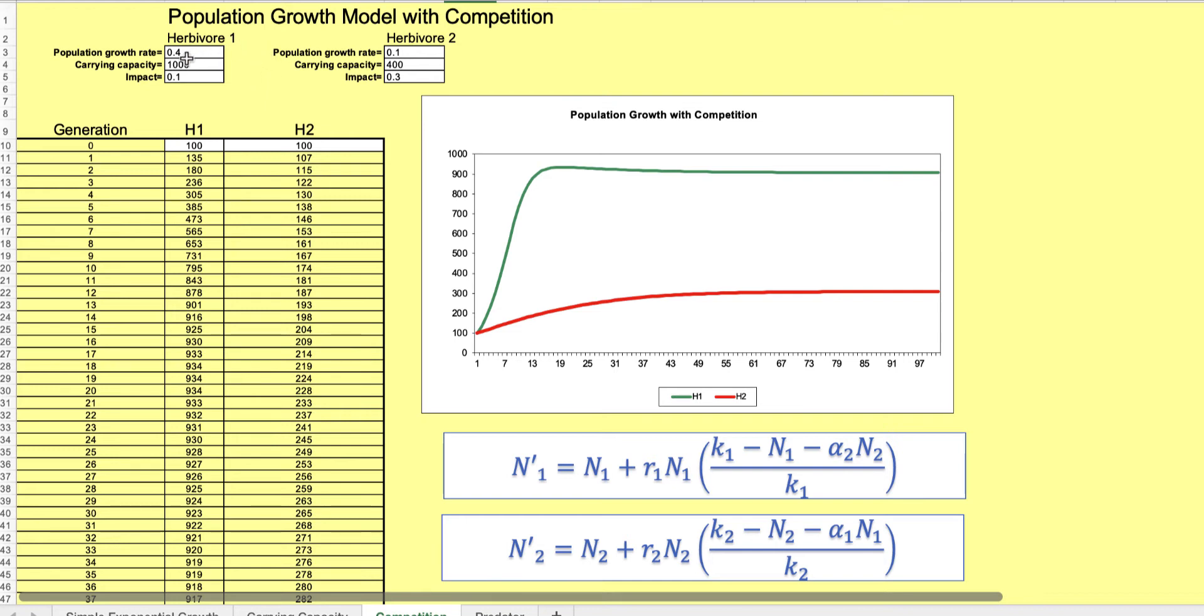Let's say that the carrying capacity of rabbits is, you can have a thousand rabbits and their population growth rate is very high, let's say it's 0.6. But their impact is huge because they eat all the grass and that would kill off all of the cows.